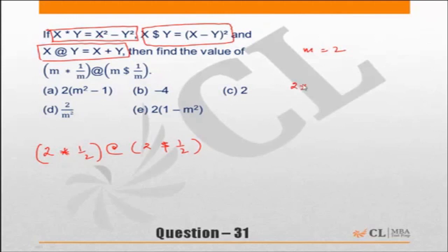2 star 1 by 2 is nothing but 2 square minus 1 by 2 square, which is equal to 4 minus 1 by 4, which is nothing but 16 minus 1, 15 by 4. So 2 star 1 by 2 we have calculated.